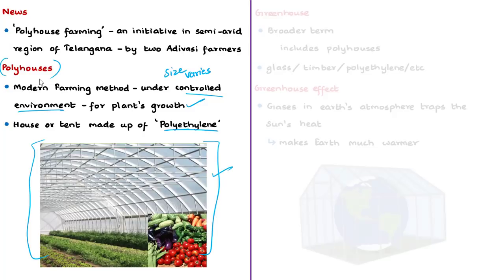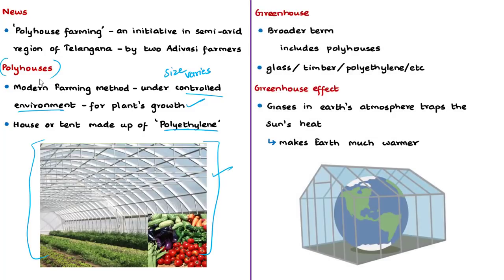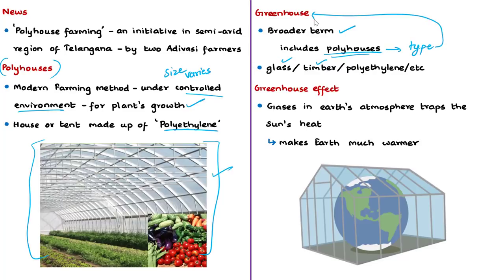You may have a doubt that the description of a polyhouse sounds like a greenhouse. A greenhouse is a broader term — if you are using glass or timber, it is greenhouse farming. Polyhouse farming is one type of greenhouse farming style where polyethylene is used as the cover.